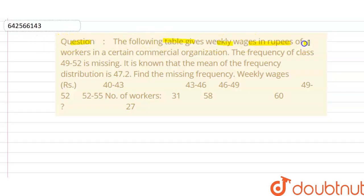The following table gives weekly wages in rupees of workers in a certain commercial organization. The frequency of class 49 to 52 is missing.